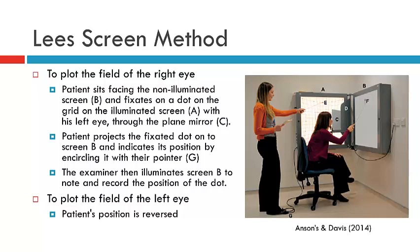Here we have a photograph of a patient being assessed using the Lee screen. In this instance, given that the screen on the left is illuminated, it is the left eye that's fixing and we're assessing the right eye. We can see that the orthoptist is pointing to the screen that's illuminated and the patient is responding by using their pointer and telling the orthoptist where they perceive superimposition to be or where they perceive their pointer to be on top of the examiner's pointer.